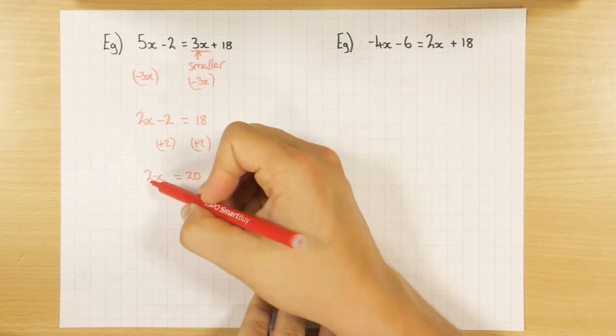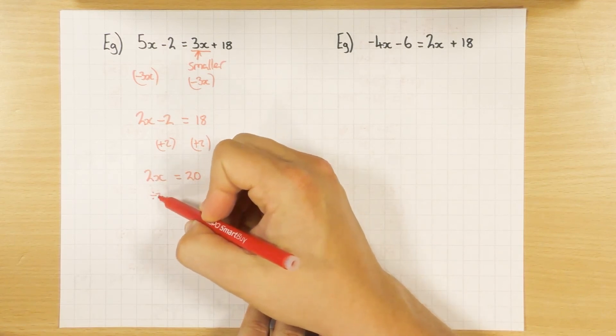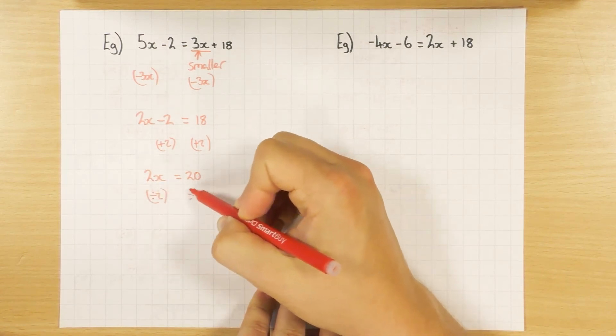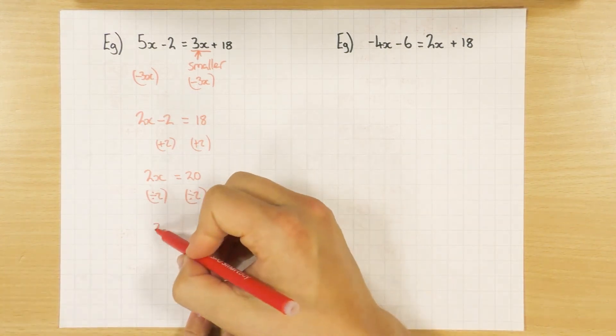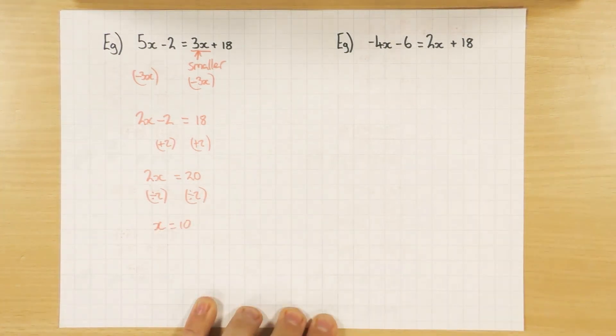2x. So 2 times x. Do the opposite. Divide by 2. Again, to both sides. So x equals 10. Happy days!